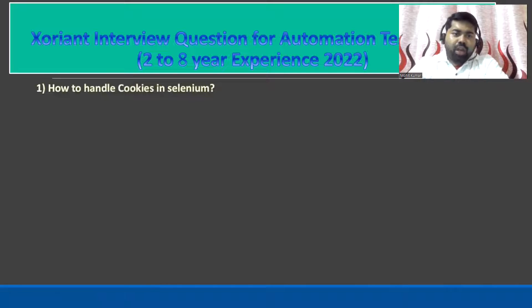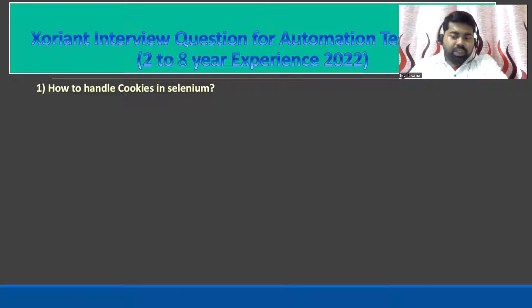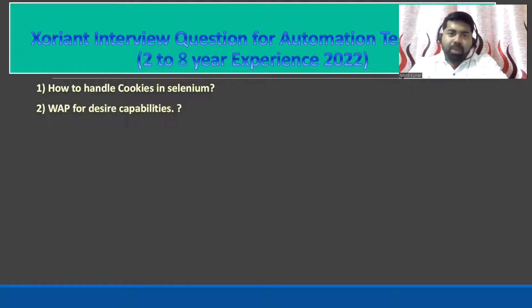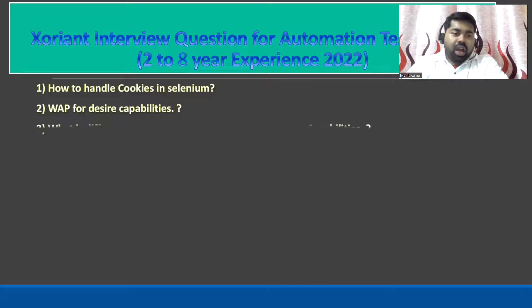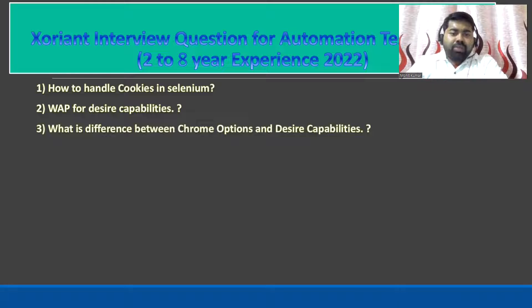The first question is how to handle cookies in Selenium. The second question is write a program for desired capabilities — you can Google it or visit my channel for the answer. The third question is what is the difference between Chrome options and Chrome desired capabilities.